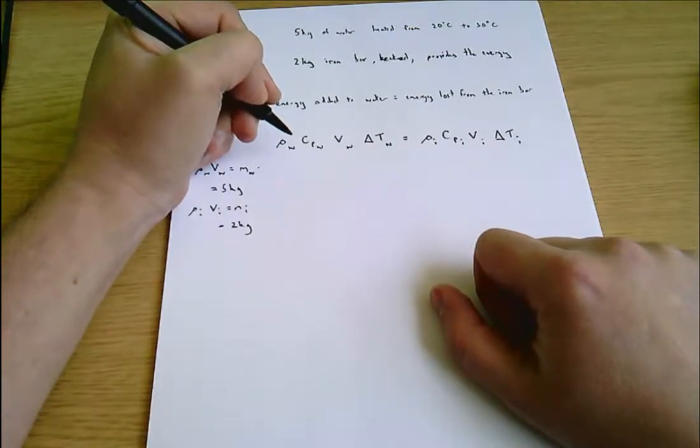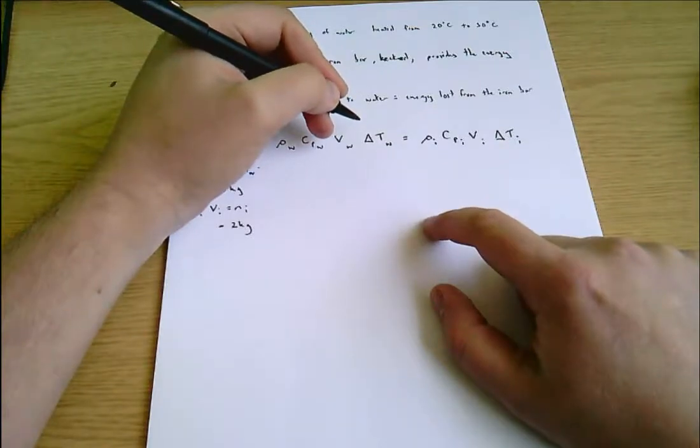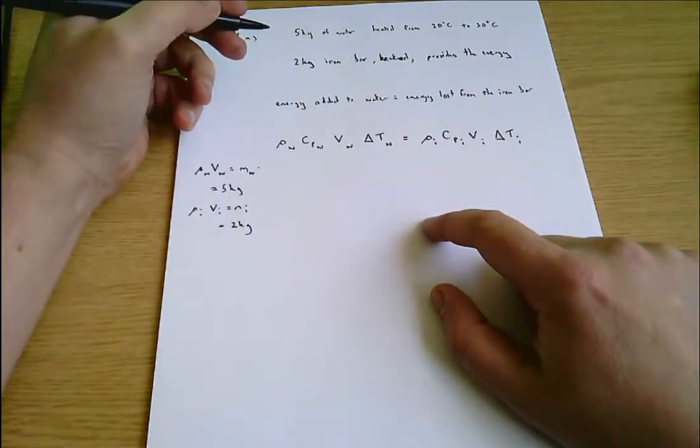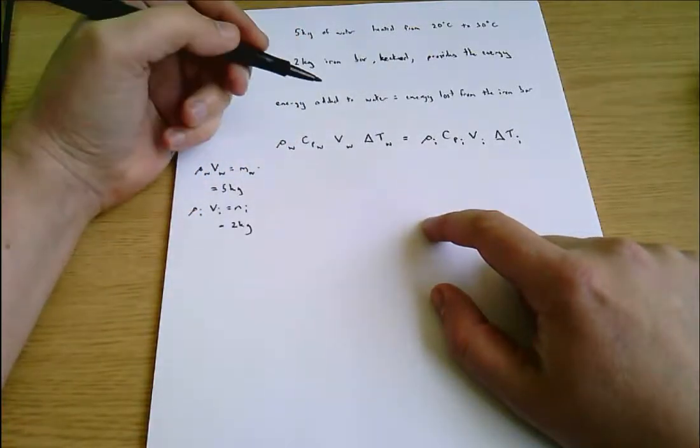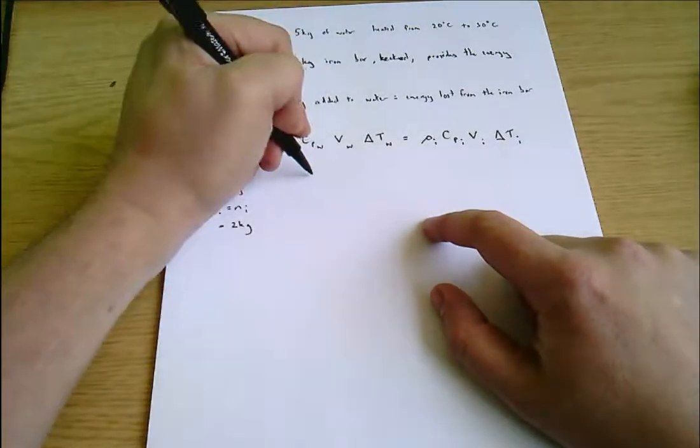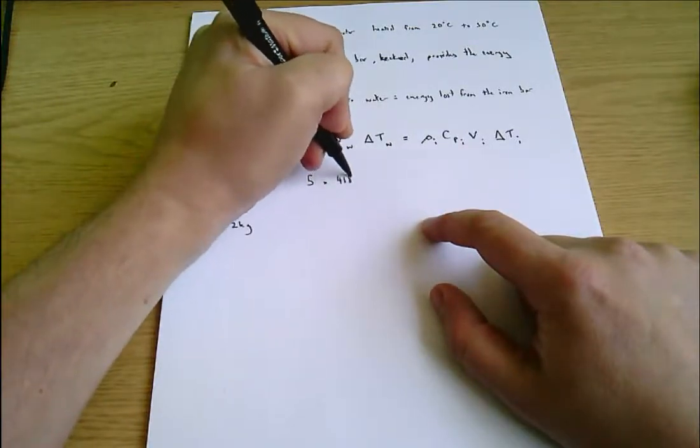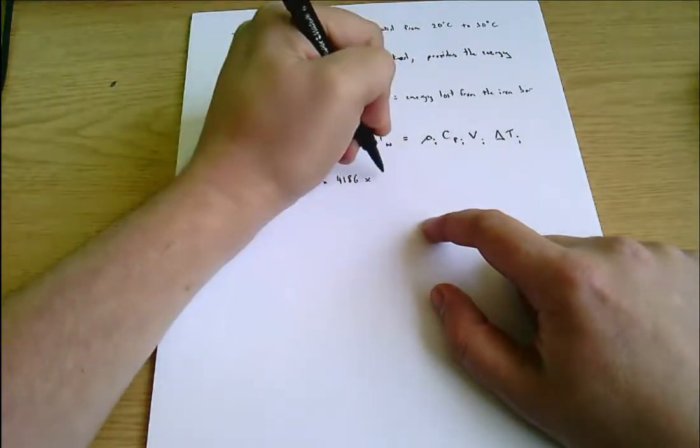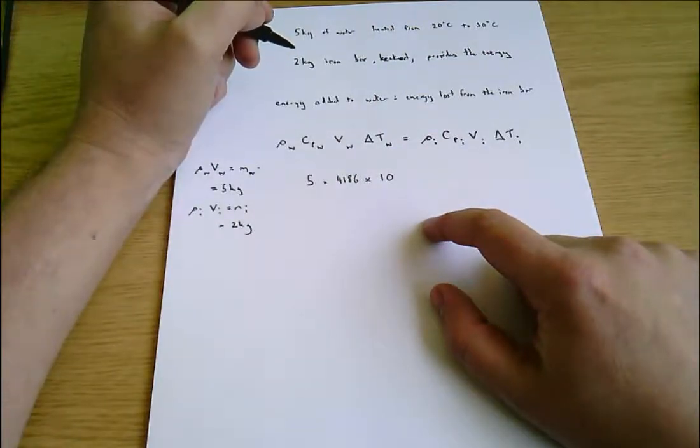Cp for water is 4186, and the change of temperature is 10 degrees Celsius. When dealing with temperature changes, degrees Celsius and Kelvins end up being the same. This is a change of 10 degrees Celsius, which is the same as 10 Kelvin. So we've got five times 4186 times 10, and that's all in SI derived units.